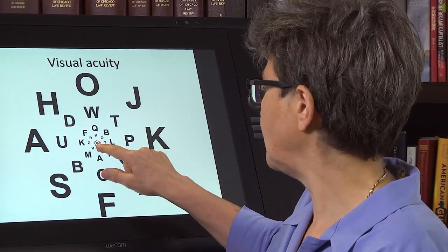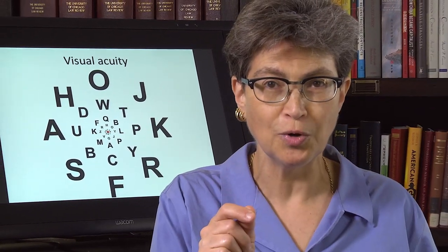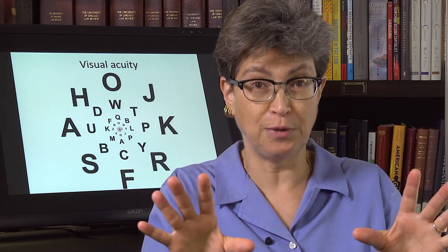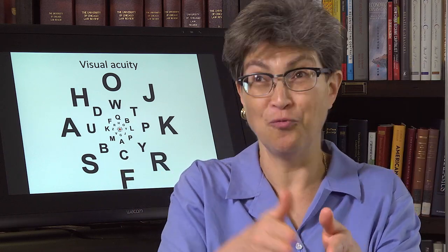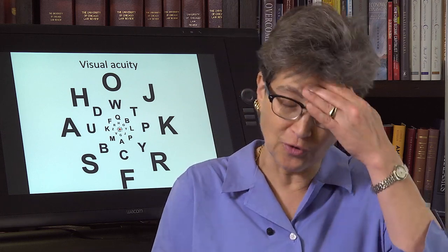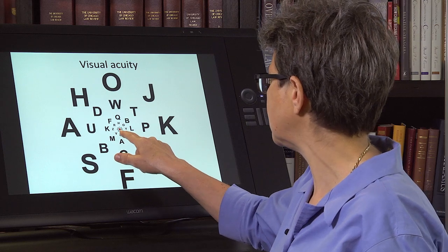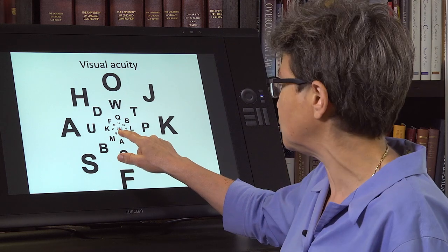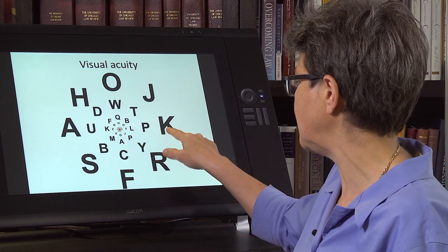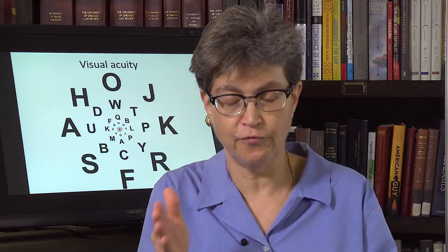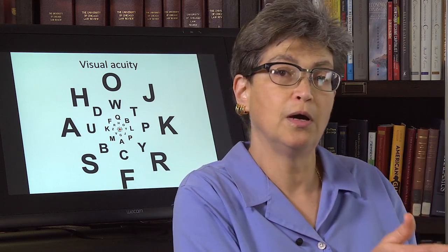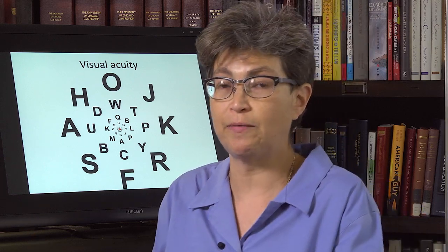Finally, one of the things we do to enable our vision is that we dart our eyes around to put different aspects of the visual scene at the center of our vision. We make eye movements to enable us to understand a whole scene. Keeping your eyes steady is a very difficult thing to do — if I want to know what's out here, my impulse is to change my point of fixation to look at it. Eye movements are very much coupled to visual acuity.